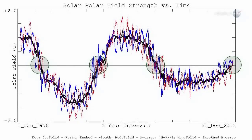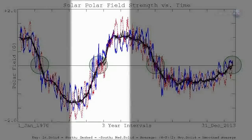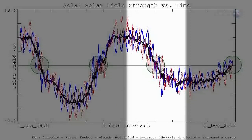Magnetograms at Wilcox have been tracking the Sun's polar magnetism since 1976, and they have recorded three grand reversals, with a fourth in the offing.